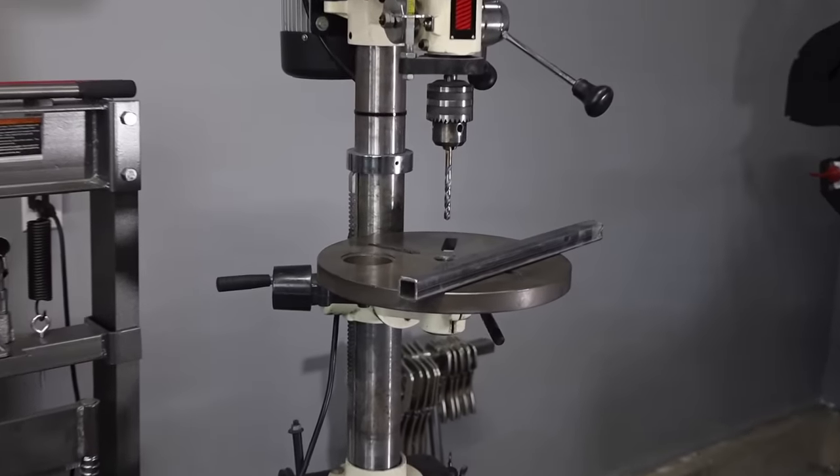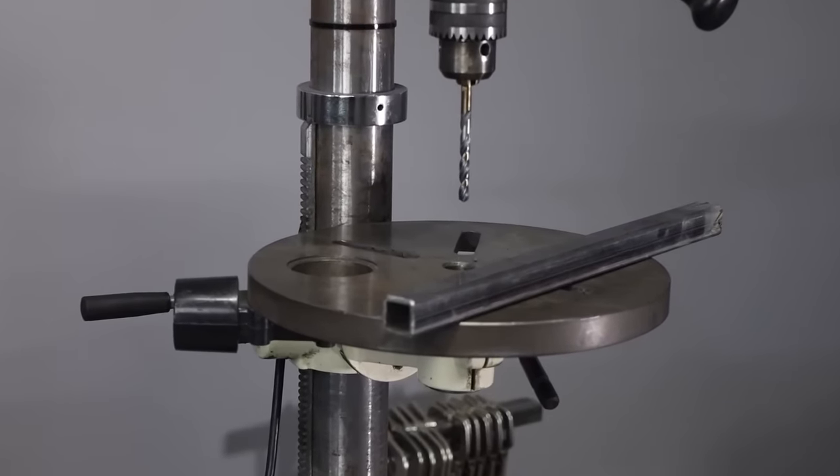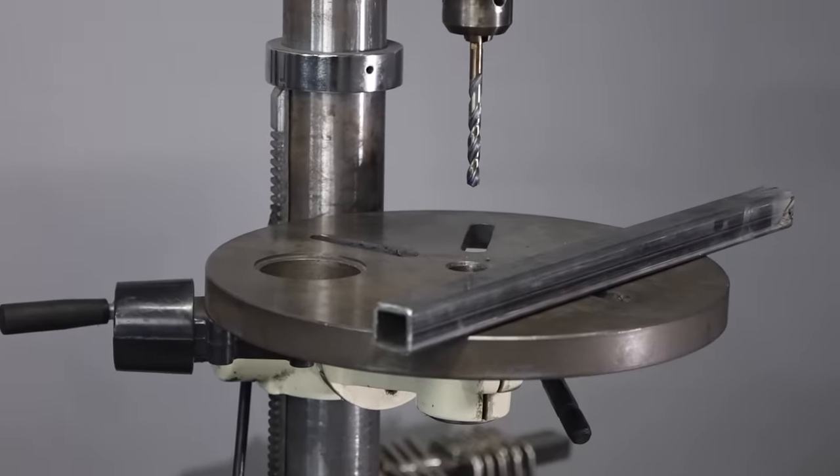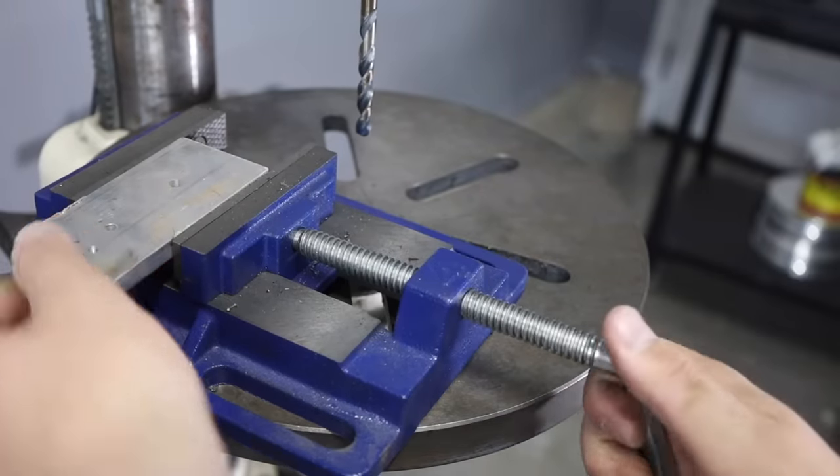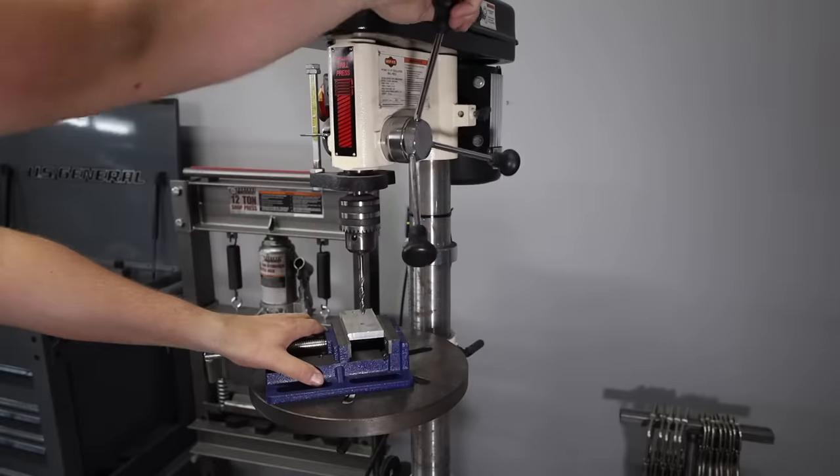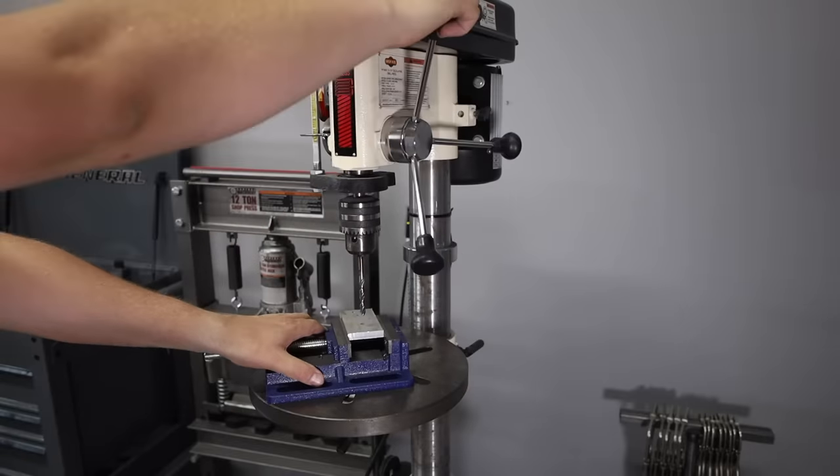My goal is to improve the work holding on the table here on the drill press. Now I have a vice that's great for holding small parts in place. However, I end up holding the vice itself with one hand when I drill, which to some extent might defeat the purpose.